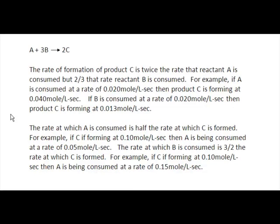Here's another example where A plus 3B yield 2C. The rate of formation of the product C is twice the rate at which A is consumed, because of the 2 in front of the C and the 1 in front of the A. But the formation of C is two-thirds the rate at which B is consumed.